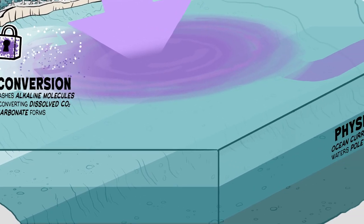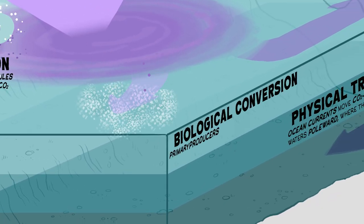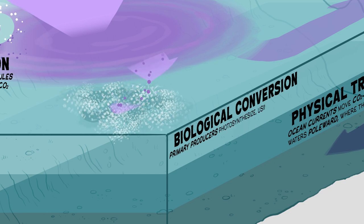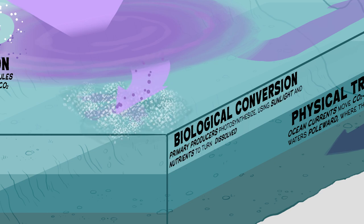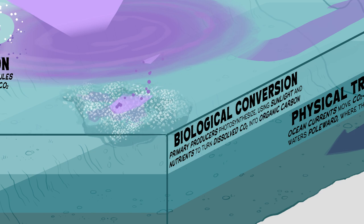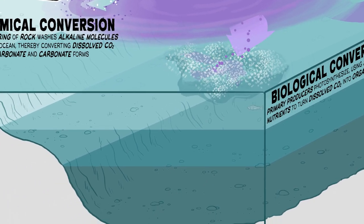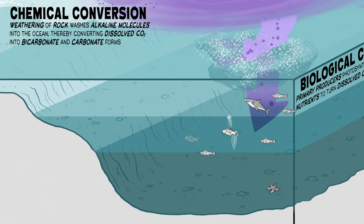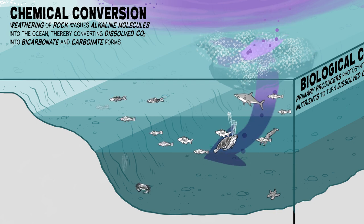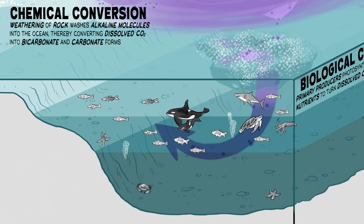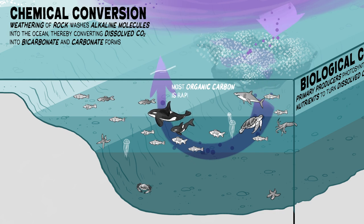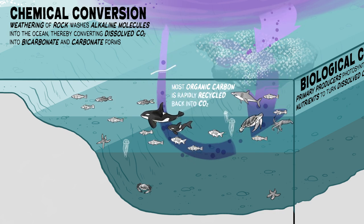On much shorter timescales, primary producers photosynthesize, using sunlight and nutrients to turn dissolved CO2 into organic carbon that fuels the food web. As organisms feed on one another, and trillions of microbes digest even the smallest of particles, most organic carbon is rapidly recycled back into CO2.